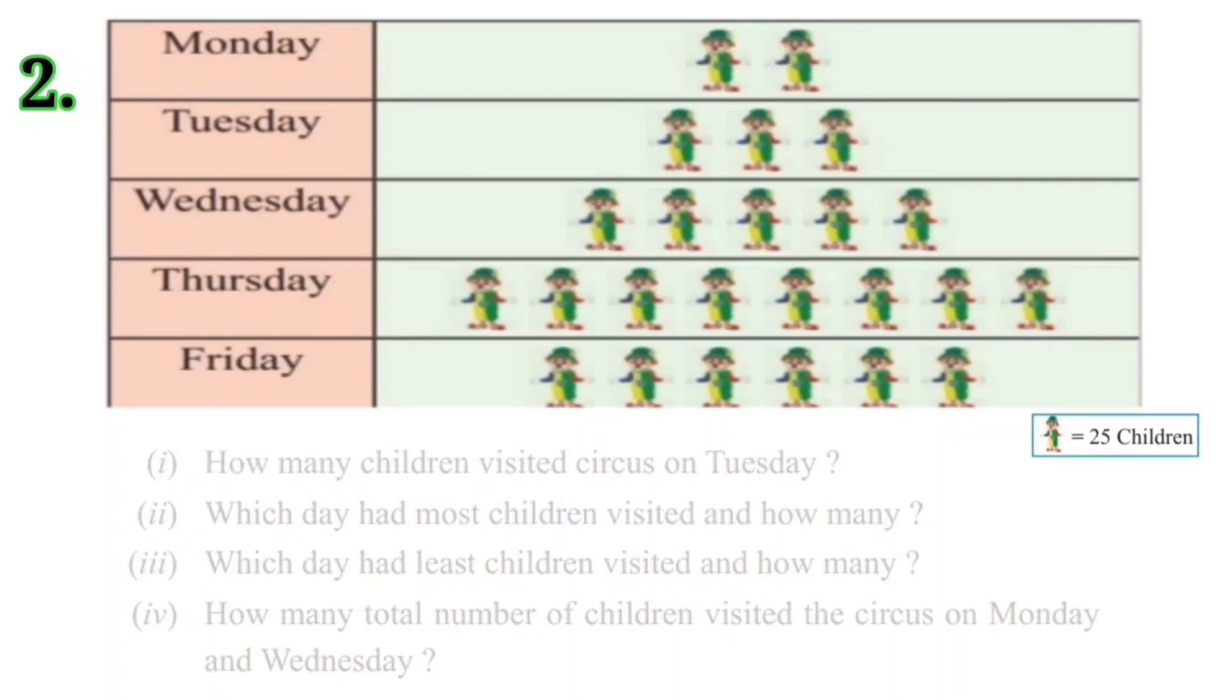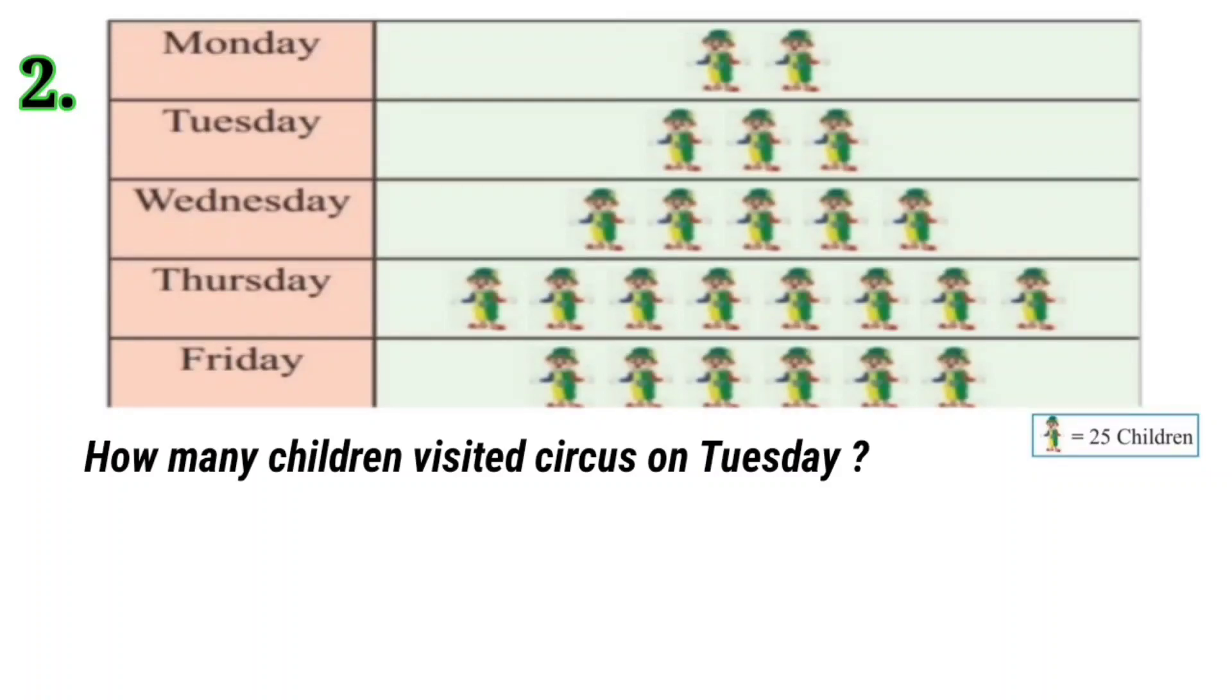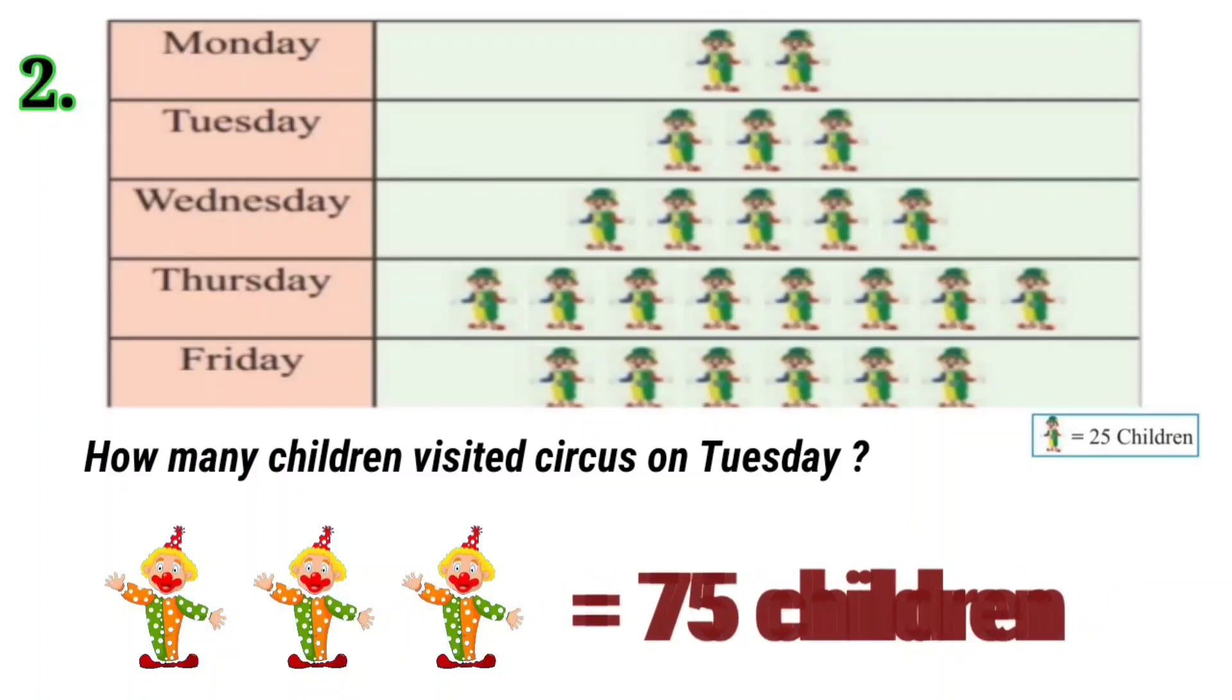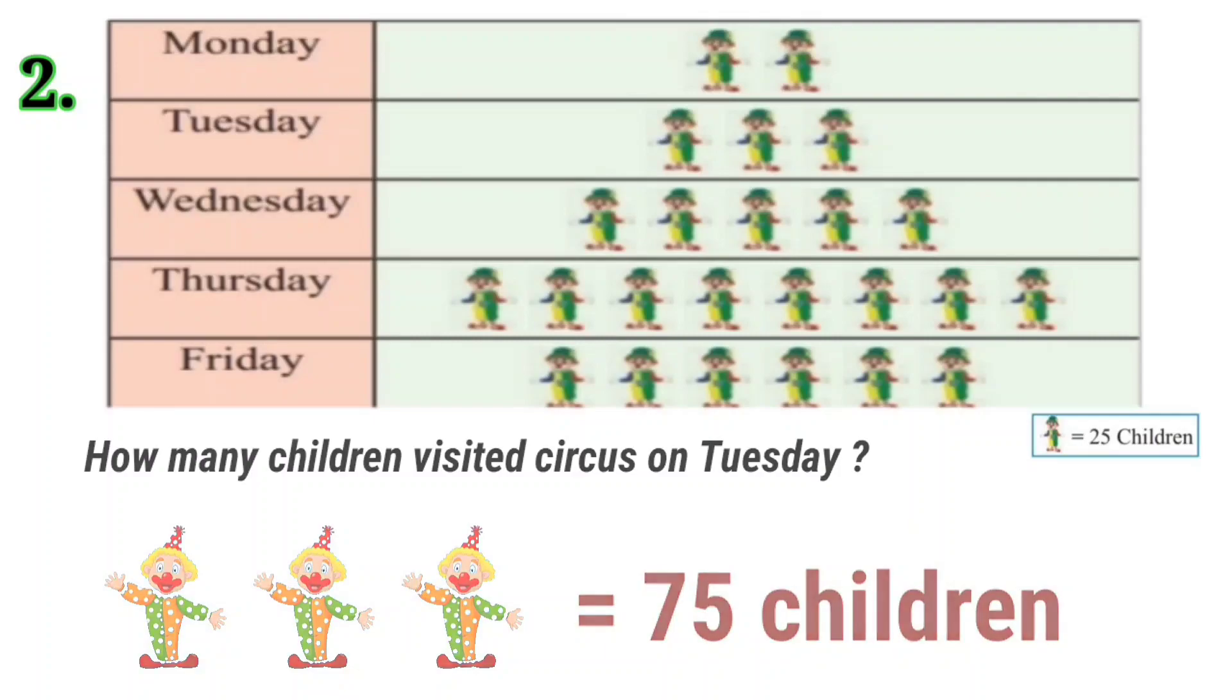First question is, how many children visited circus on Tuesday? When we look at the picture graph, 3 symbols are used for Tuesday. 3 into 25 is 75. Therefore, 75 children visited circus on Tuesday.